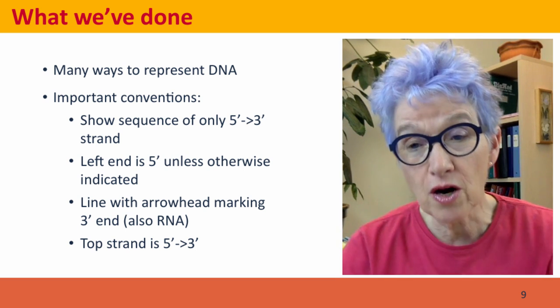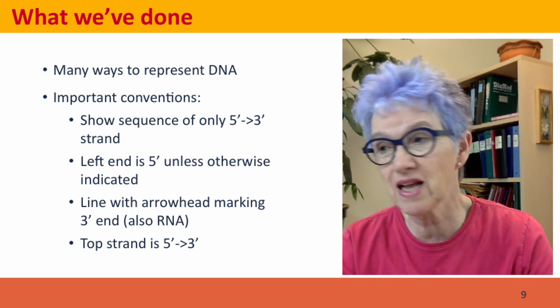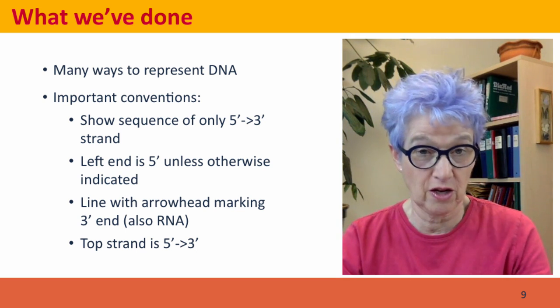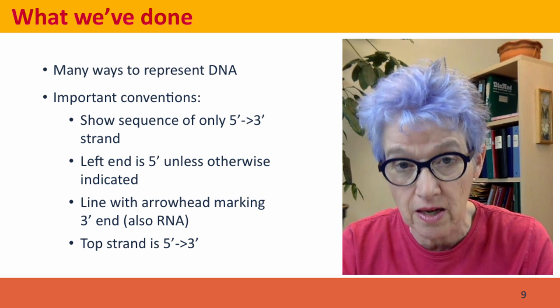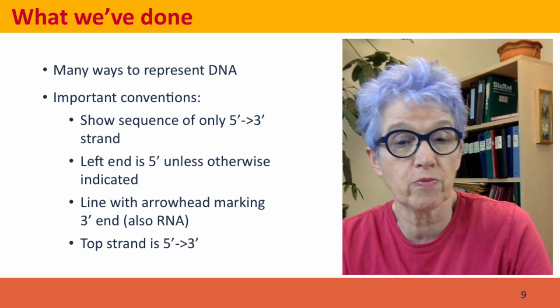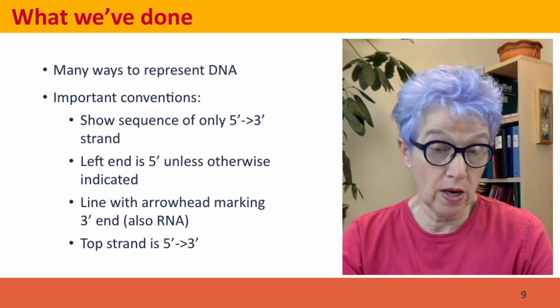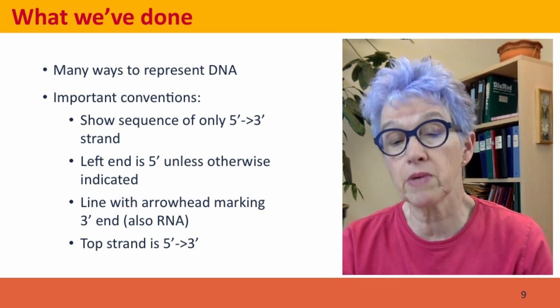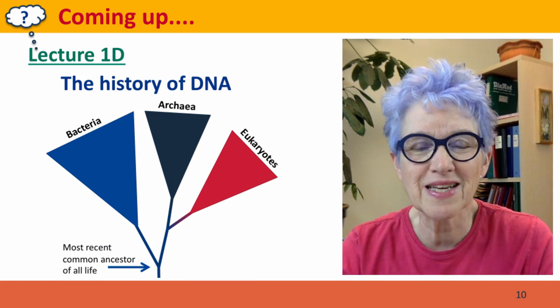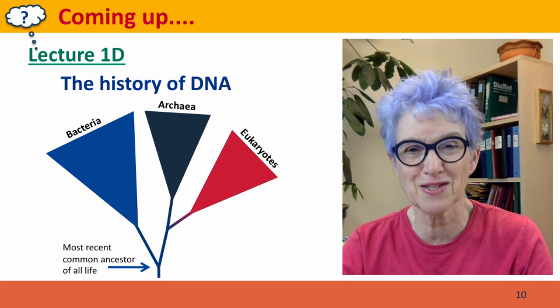So, what have we done? We've talked about different ways to represent DNA, why we need to have ways to represent DNA. Unlike people who study mice or flowers, we can't see it at all. So, we have important conventions that we can represent DNA by something as simple as a line, but if we're drawing a line, it represents DNA running in the 5' to 3' direction. We use arrowheads to indicate directions. We can write two strands, but we don't need to show two strands because the sequences are complementary. Now, coming up next in Lecture 1D, we're going to talk about the history of DNA, starting with the replication of DNA. I hope to see you there.